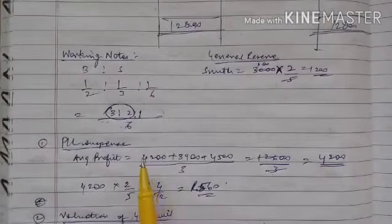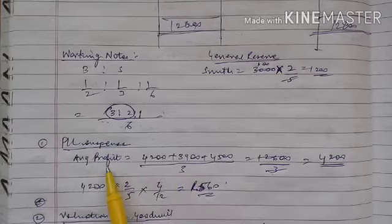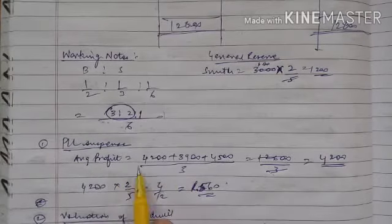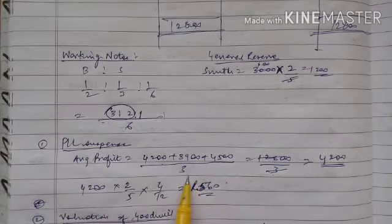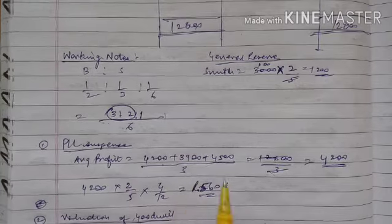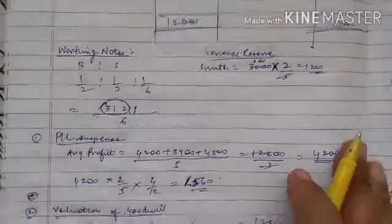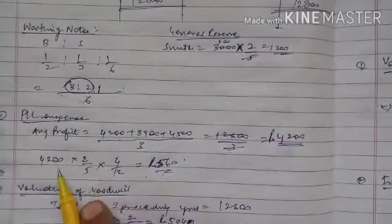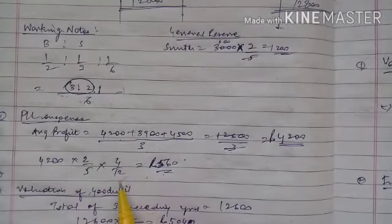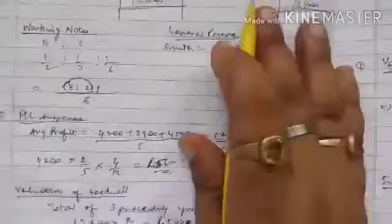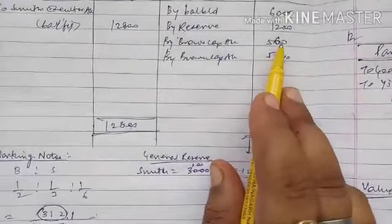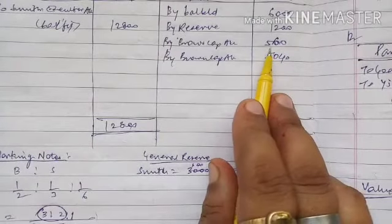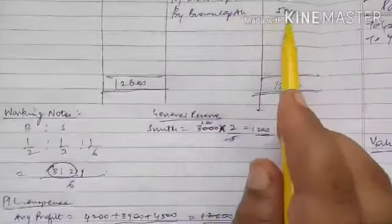Next we calculate the P&L Suspense Account. The average profit is 4200, as already noted. The proportion of profit to the date of death is based on the average profit of the last three completed years. From 4200, we calculate his share along with the number of months till the date of his death, which gives us 560. We write 560 in Smith's capital account.